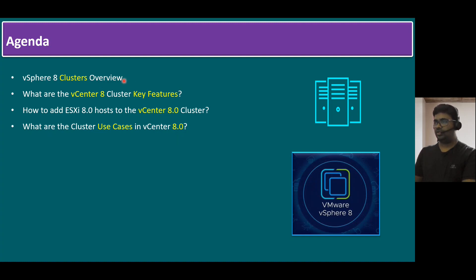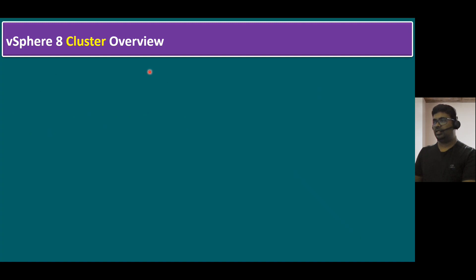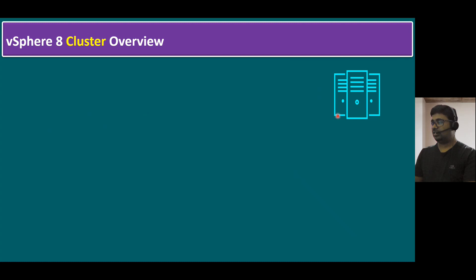Let's start with the first point. If you see the cluster icon, this is a new icon for VMware vSphere 8. Within the vSphere cluster overview, let's try to understand the cluster first. The cluster icon looks like a server or ESXi host icon — we have three hosts combined here, so the cluster definition is the same.